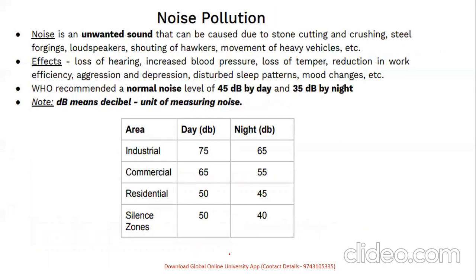Noise pollution — an unwanted sound — has a huge impact including hearing loss, increased blood pressure, reduced work efficiency, depression, and disturbed sleep patterns. The World Health Organization has recommended a normal noise level of 45 decibels by day and 35 by night. Questions frequently appear on the limits for industrial, commercial, residential, and silent zones — so remember this table well. Decibel (dB) is the unit for measuring noise.